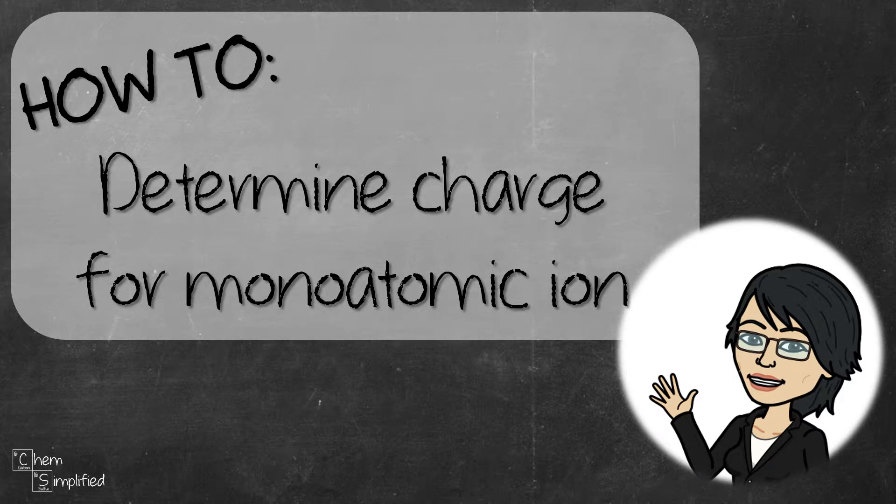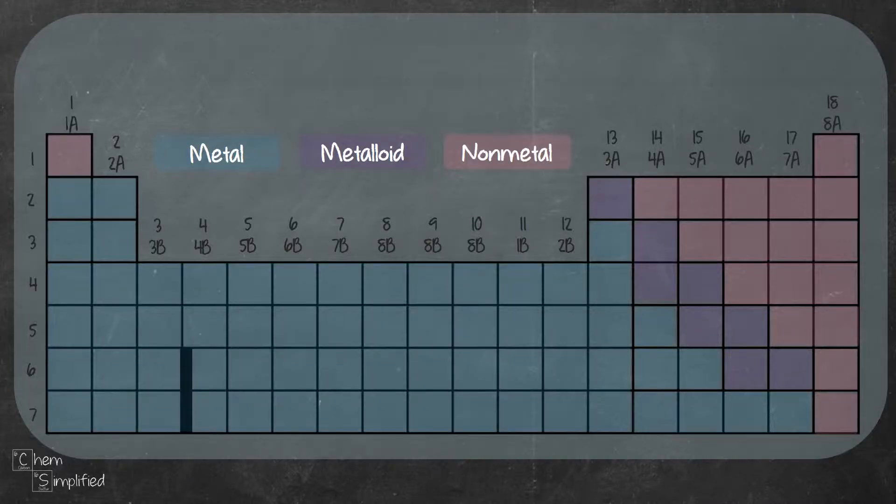In this video, we're going to look at an easy way to figure out the charges for ions containing one atom. When it comes to forming ions, metals will donate electrons to form cations, which are positively charged ions.